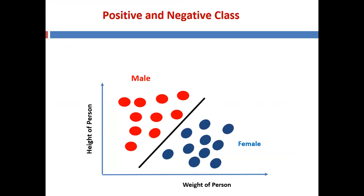Let us assume that we have been given a problem of classifying a given person as male or female, given the weight and height of the person. As part of machine learning processing, we first represent the sample data or input instances across a two-dimensional Cartesian coordinate system where the x-axis represents the weight and the y-axis represents the height of the person. The black solid line shown in the figure represents the decision boundary that performs the classification. The white circles belong to the male class and the blue circles belong to the female class.